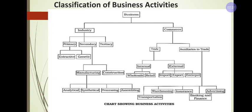Coming to commerce, it can be classified into two broad categories: trade and auxiliaries to trade. Trade can be classified as internal trade and external trade. Internal trade can be classified as wholesale trade and retail trade. External trade can be classified as import, export, and entrepot. Auxiliaries to trade include transportation, warehousing, insurance, banking and finance, and advertising.